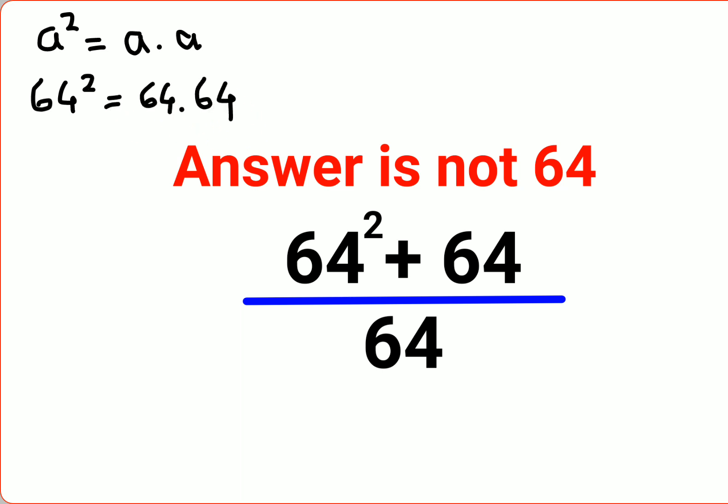So let's put this over here. We have 64 into 64 plus 64 upon 64. Now what you can do is we will take 64 common from the numerator. So we will have just 64 left in the first place and then because this 64 is taken outside so we will have just one over here.